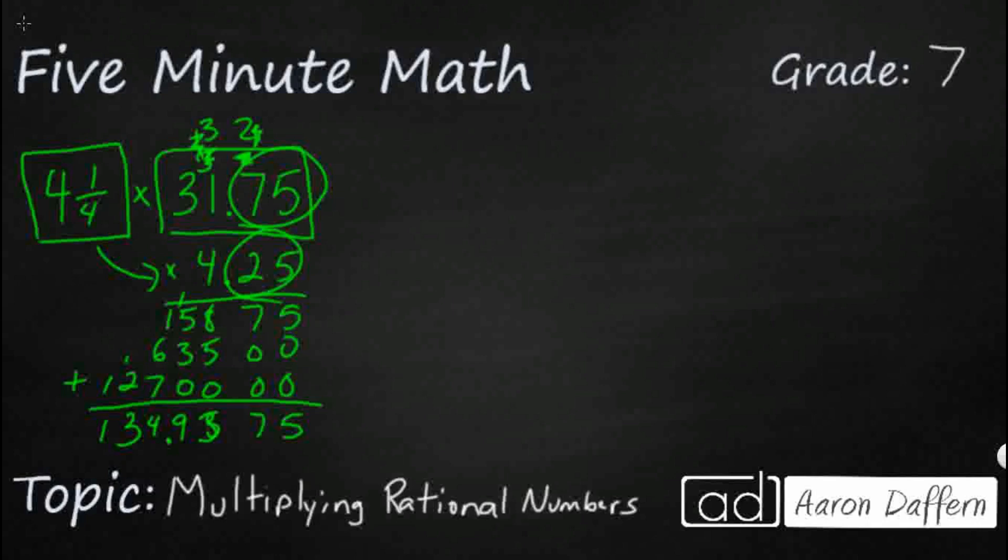Another way that we could look at that, if we really wanted to, is we could change them both into our mixed numbers. So we've got 4 and 1 quarter. Thankfully, we know that 75 hundredths makes 3 quarters.